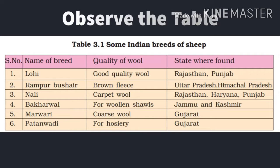Lohi is a breed of sheep that provides good quality wool and can be seen in the states of Rajasthan and Punjab. Next, Rampur Bushair has brown fleece and is seen in Uttar Pradesh and Himachal Pradesh. Nali provides carpet wool used to make carpets, found in Rajasthan and Haryana. Bakerwali is for woolen shawls in Jammu and Kashmir. Marwari provides coarse wool in Gujarat. Patanwadi is used for hosiery — garments worn on feet and legs — also in Gujarat.